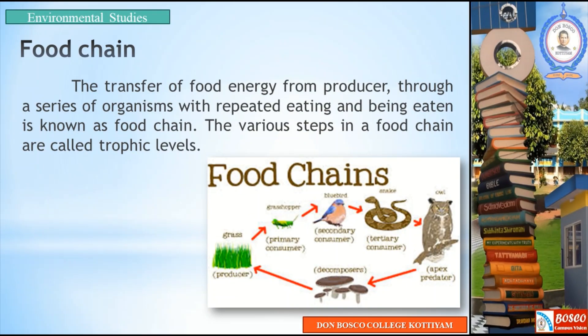At first let us see what is a food chain. The transfer of food energy from producers through a series of organisms with repeated eating and being eaten is known as a food chain. The structure of ecosystem is divided by biotic and abiotic components and divided by producers, consumers and decomposers. These three components are a chain of food energy. We call it food chain.